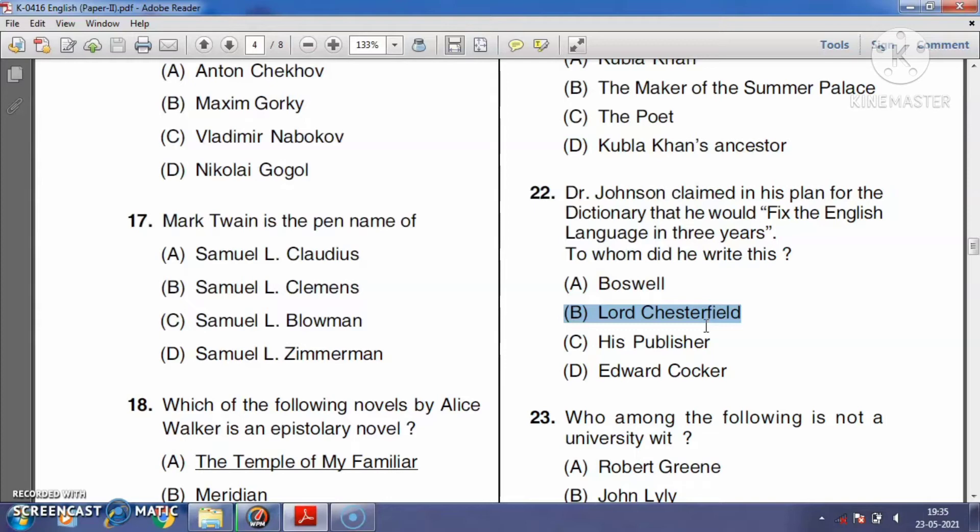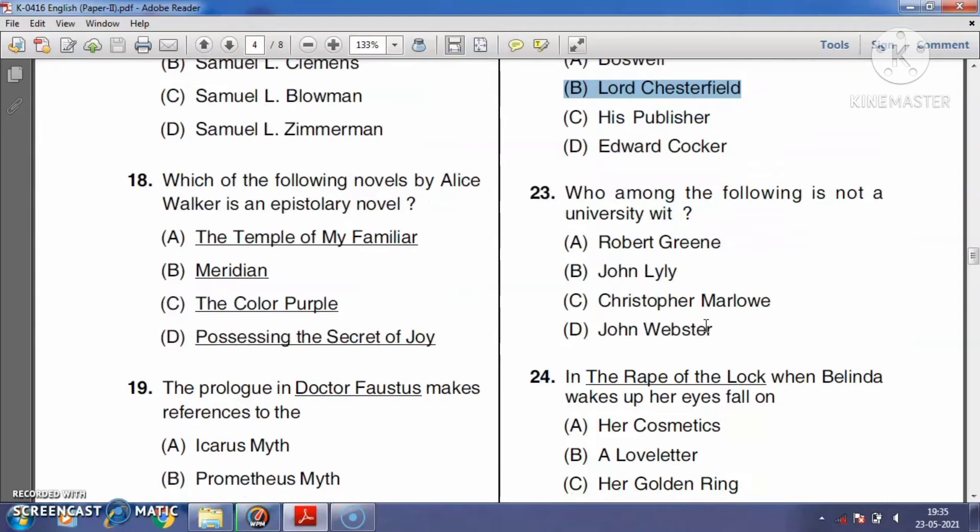Question number twenty-three: Who among the following is not a university wit? Robert Greene, John Lyly, Christopher Marlowe, or John Webster? The right answer is John Webster. John Webster is not a university wit, but he is an English Jacobean dramatist known for his tragedies The White Devil and The Duchess of Malfi.